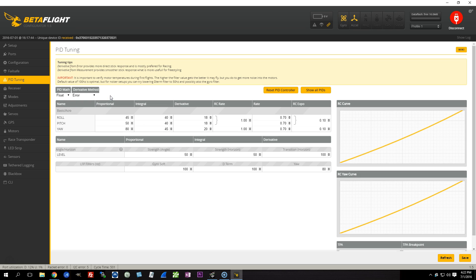The short version, for people who don't want to go into too many details, is that derivative from error gives you slightly sharper stick response with slightly rougher motors, and derivative from measurement gives you slightly softer stick response with slightly smoother running motors.